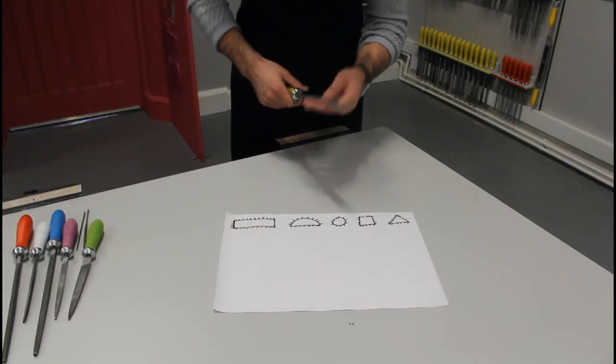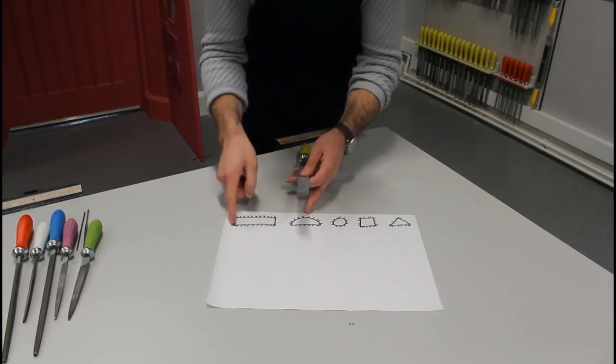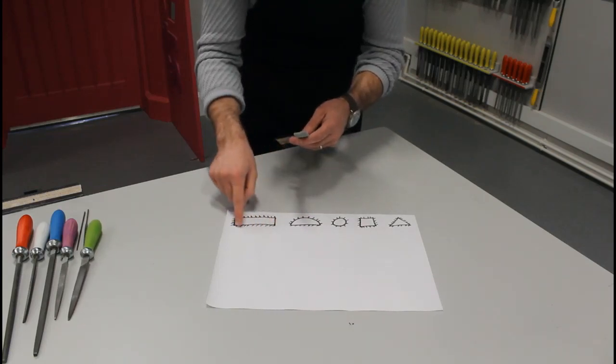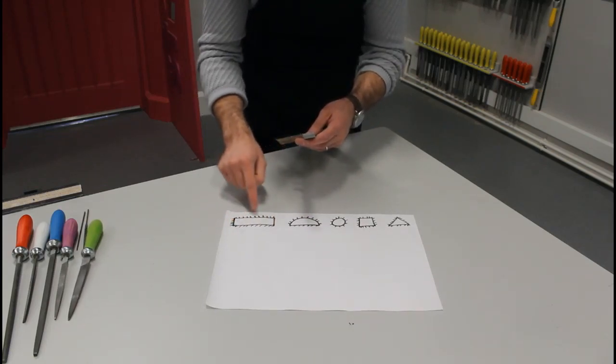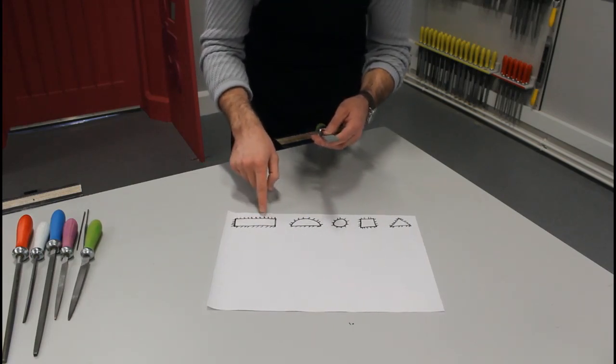So our first one is a flat file. If we look at the profile here, it's shown as a rectangle. You'll also notice these little lines that are coming along on the surfaces. And these indicate the cutting surface.